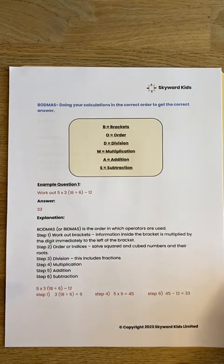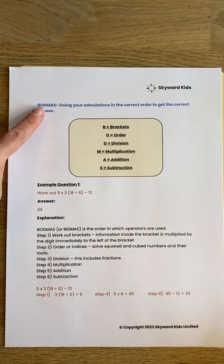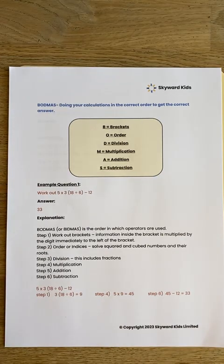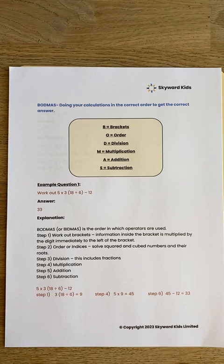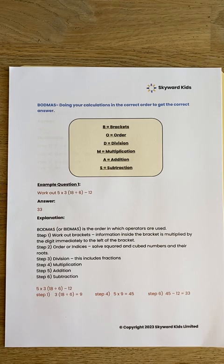Sometimes this is called BIDMAS with an I where the O is. BODMAS is useful for doing calculations in the correct order. So sums that have more than one maths operation — like addition, subtraction, multiplication or division — we need to know which order to carry out those calculations. BODMAS or BIDMAS helps us to do that. It tells us which order to do each of those calculations.